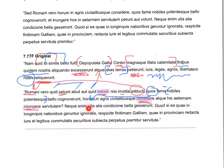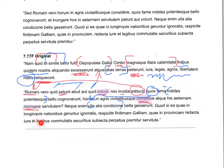Neque enim ulla alia condicione bella geserent. Here we have ablatives; bella of course is a direct object of geserent, subject still being the Romans. Neither did they wage war for any other reason or condition. Si ea quae in longinquis nationibus gerentor ignoratus, respicite finitimam galliam, quae in provinciam redacta iure et legibus commutatis subiecta perpetua servitute.